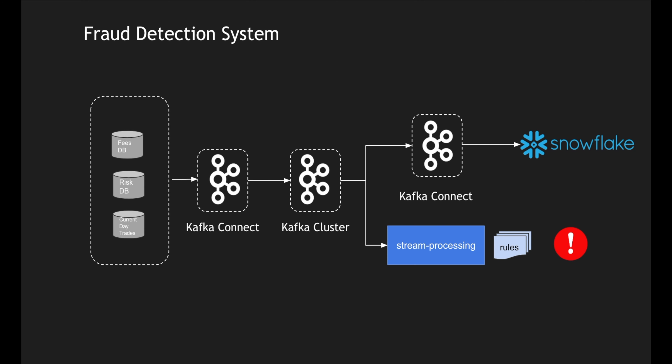Stream processing microservices consume all these messages and process them to identify rule breaches and alert users about anything suspicious happening within the system. At the same time, if I want to audit and store these messages in a central location, I can connect another Kafka Connect instance which acts as a consumer and persists the messages into something like Snowflake as a data warehouse backup. You can use Splunk as well for running queries or stats.